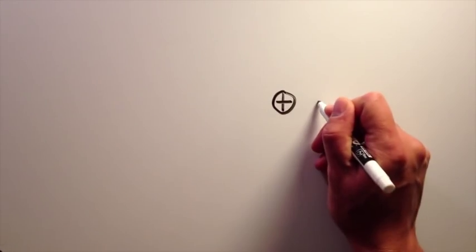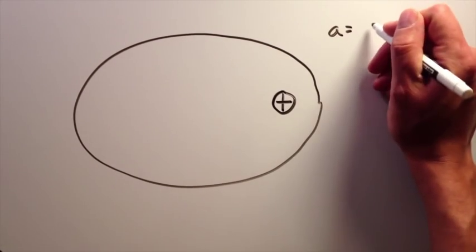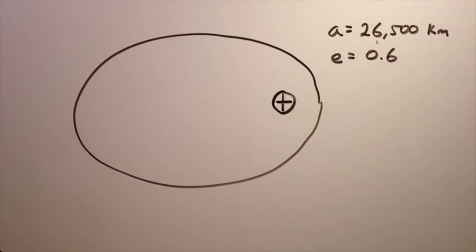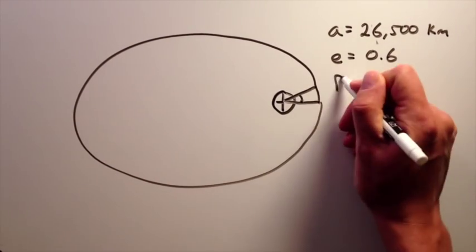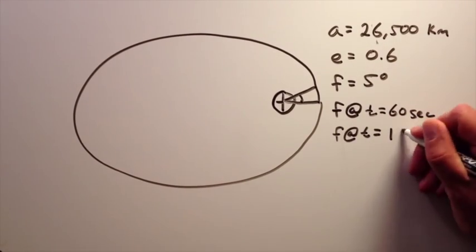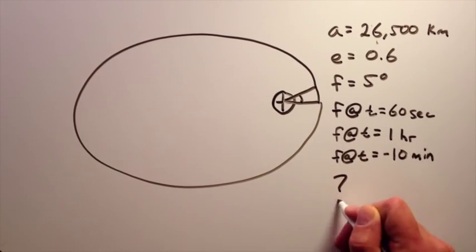Now for an example. You have an orbit with a semi-major axis of 26,500 kilometers and an eccentricity of 0.6. The current true anomaly is 5 degrees. You want to know where the satellite will be in 60 seconds and in 1 hour. You also want to know where the satellite was 10 minutes ago. How can you do this?